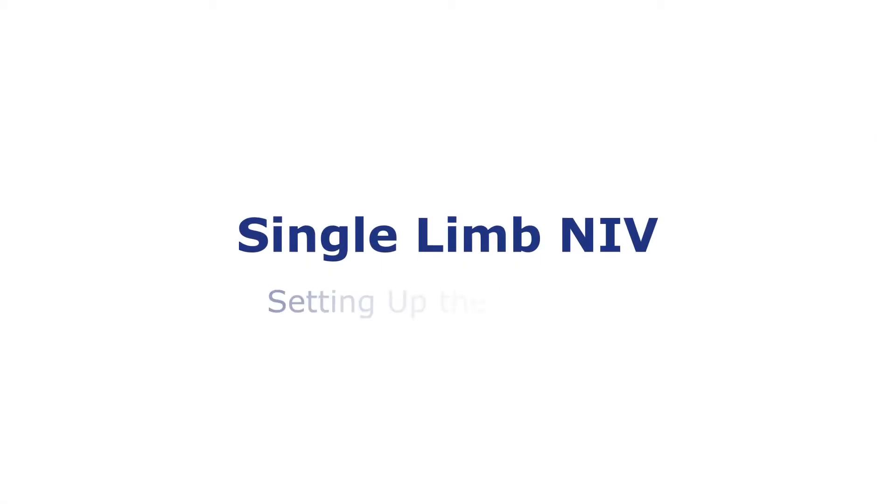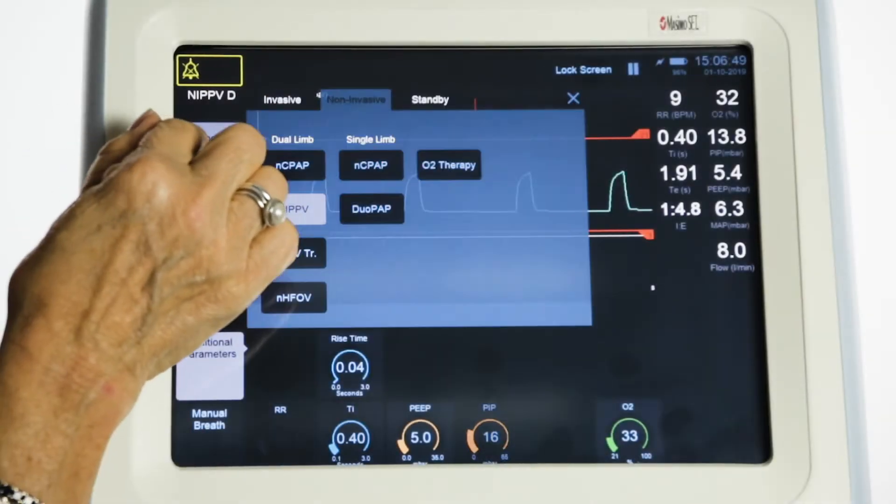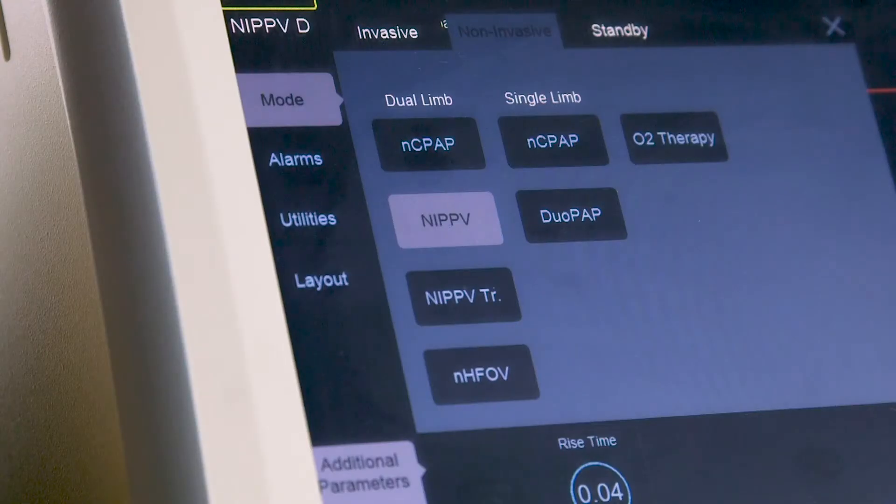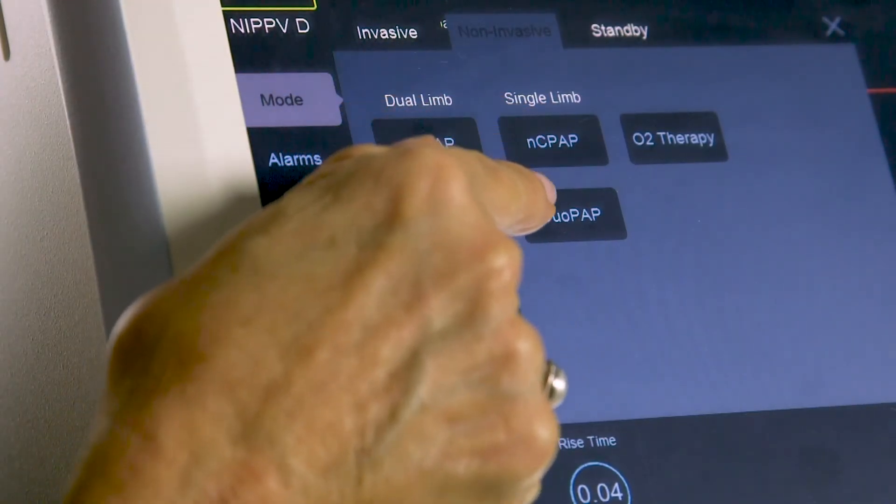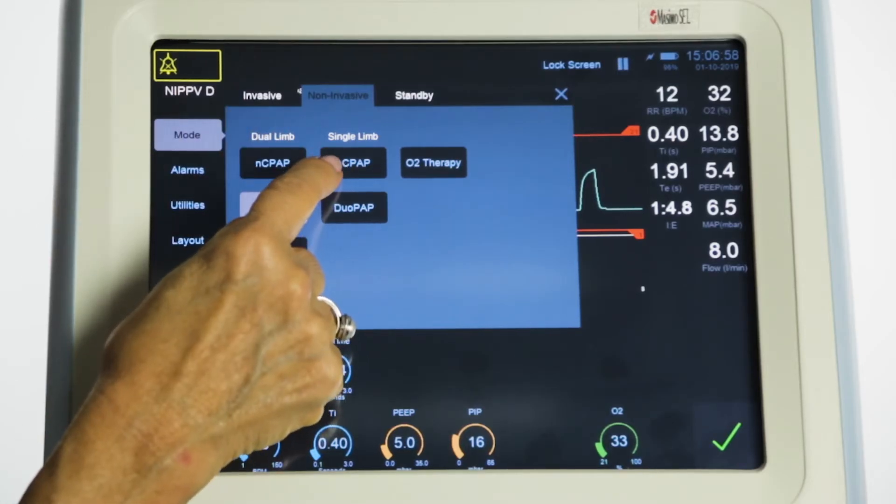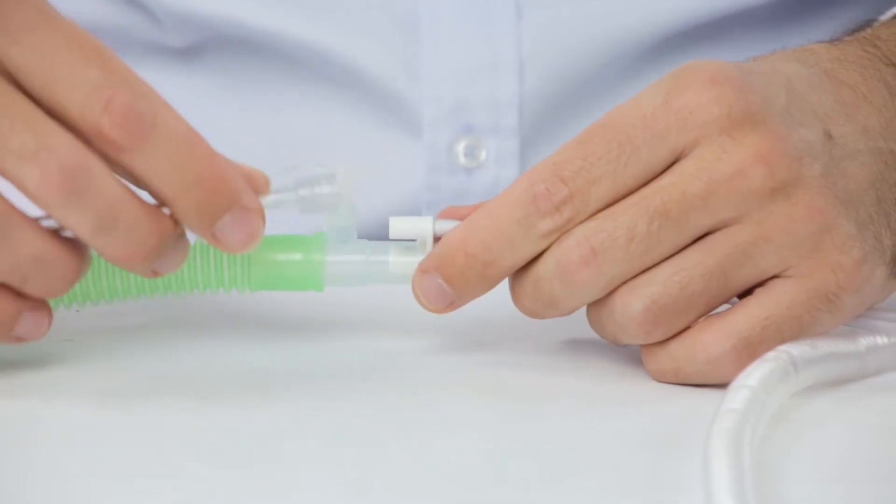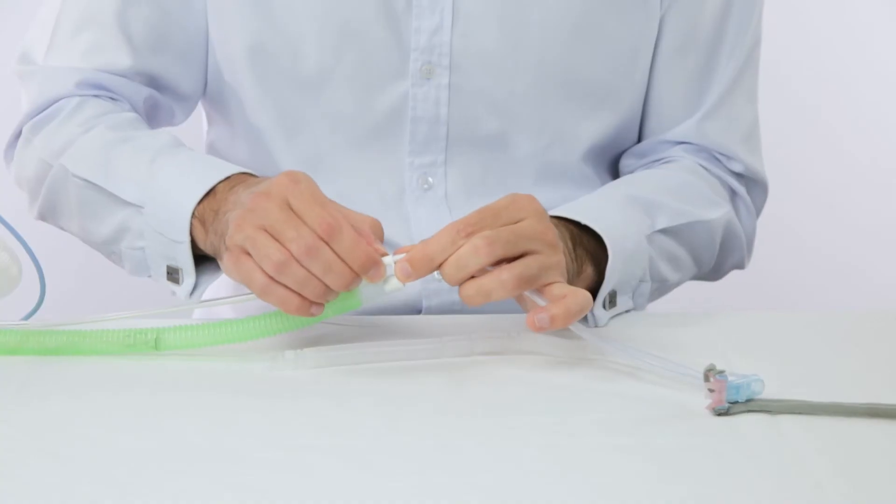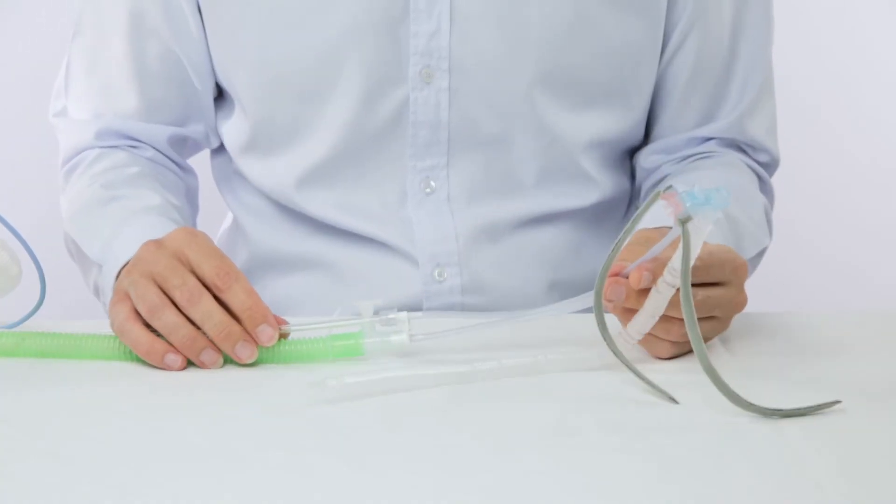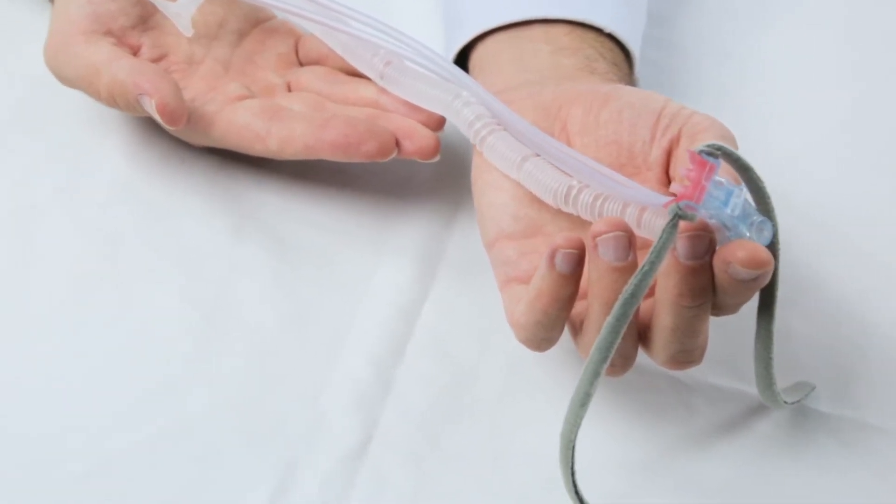Setting up the SLE6000 for single limb non-invasive ventilation. The SLE6000 infant ventilator has the facility for two different modes of single limb non-invasive therapy: NCPAP and DUO-PAP. Each mode uses the same accessories and circuit configuration already described in the previous NIV video. SLE recommends the use of the SLE1000 CPAP generator.